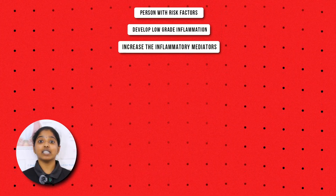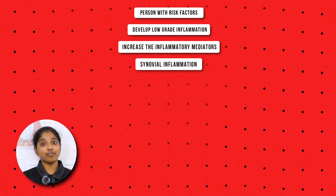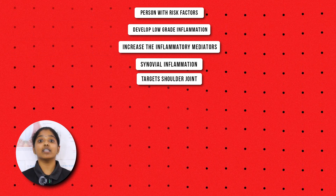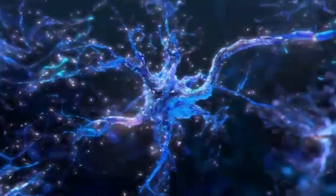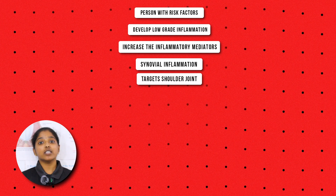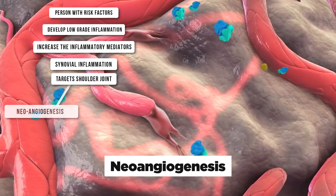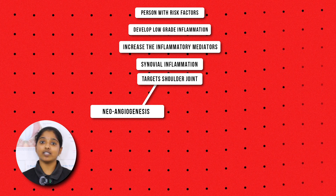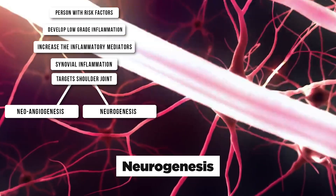These inflammatory mediators will increase the synovial inflammation. Synovial inflammation easily targets the shoulder joint because it has a high quantity of fibroblast cells. The synovial inflammation will result in over-expression of hematopoietic cell and nerve growth receptors in the affected shoulder joint. This will result in neoangiogenesis — formation of new blood vessels — and neurogenesis — formation of new nerve fibers.